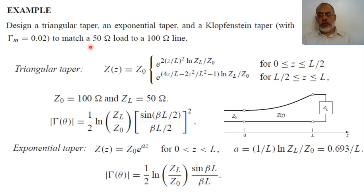In the previous two videos, we have studied different types of taper sections for matching between Z-load and Z-naught. We have studied the sub-nature taper section, the triangular taper section, and the Klopfenstein taper section.